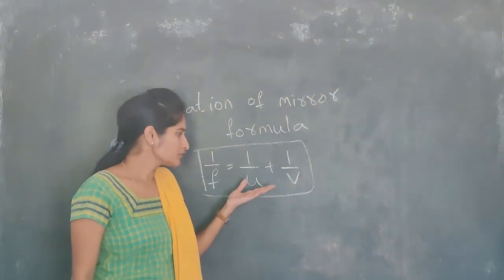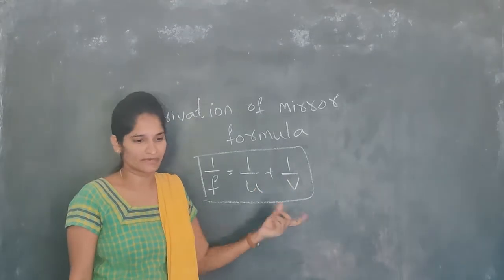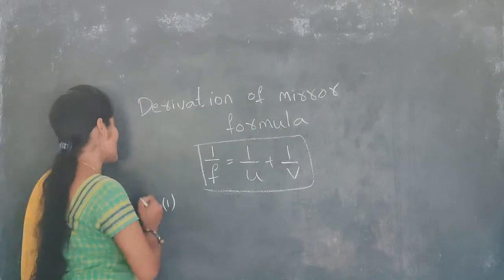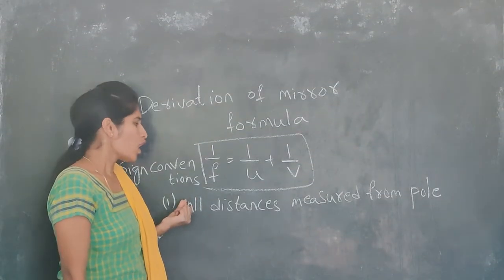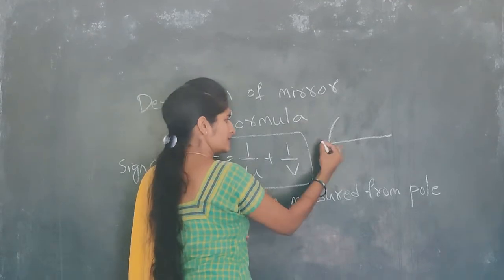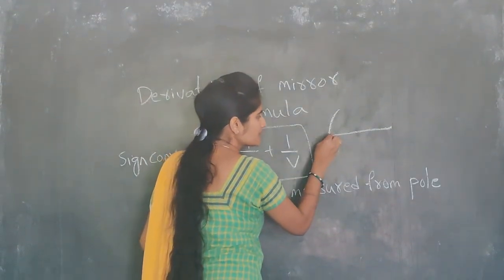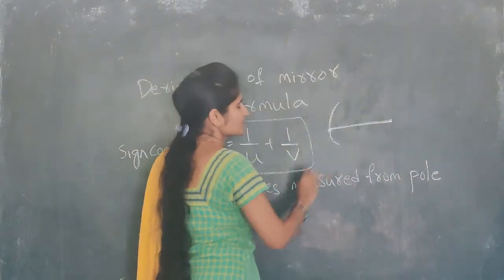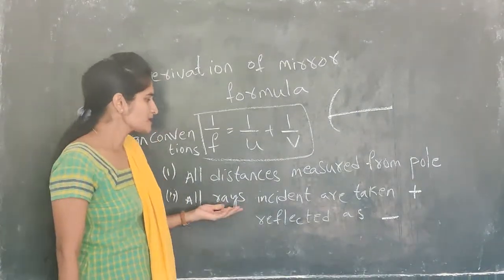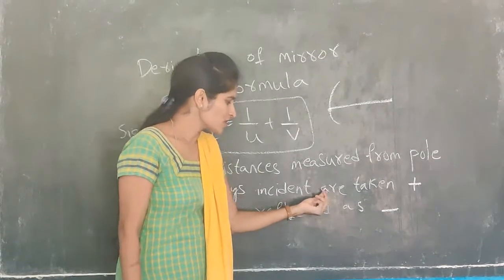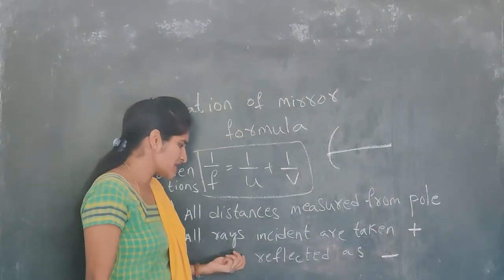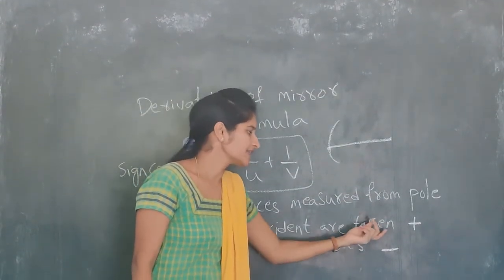We have derived the mirror formula: 1/F = 1/U + 1/V. When solving problems using this equation, we need to follow sign conventions. The first rule is that all distances should be measured from the pole. The second rule is that distances measured in the direction of the incident ray are taken as positive, and distances measured in the direction of the reflected ray are taken as negative.